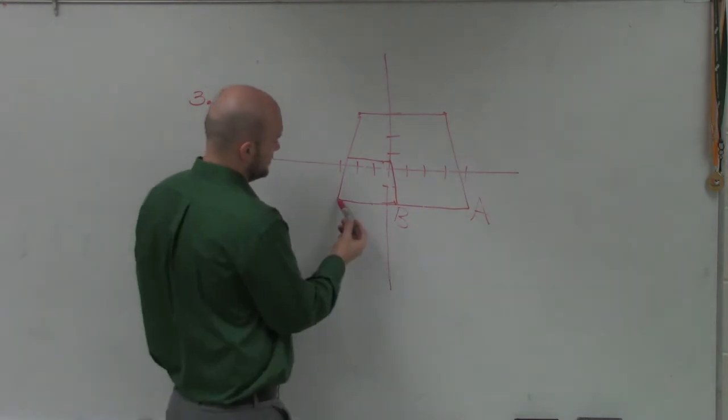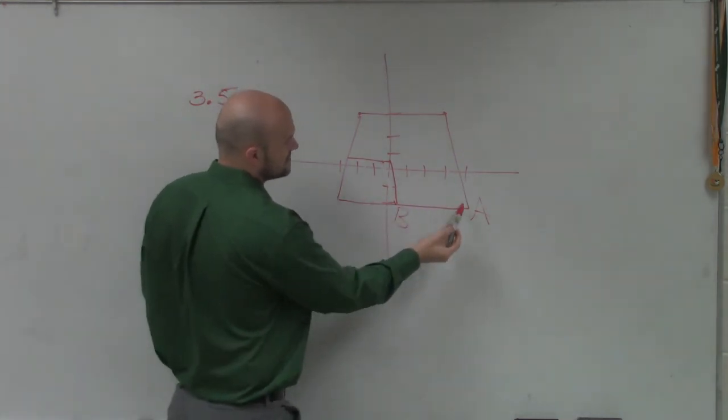And then I go over to A, which is 1, 2, 3, 4, 5, 6, 7.